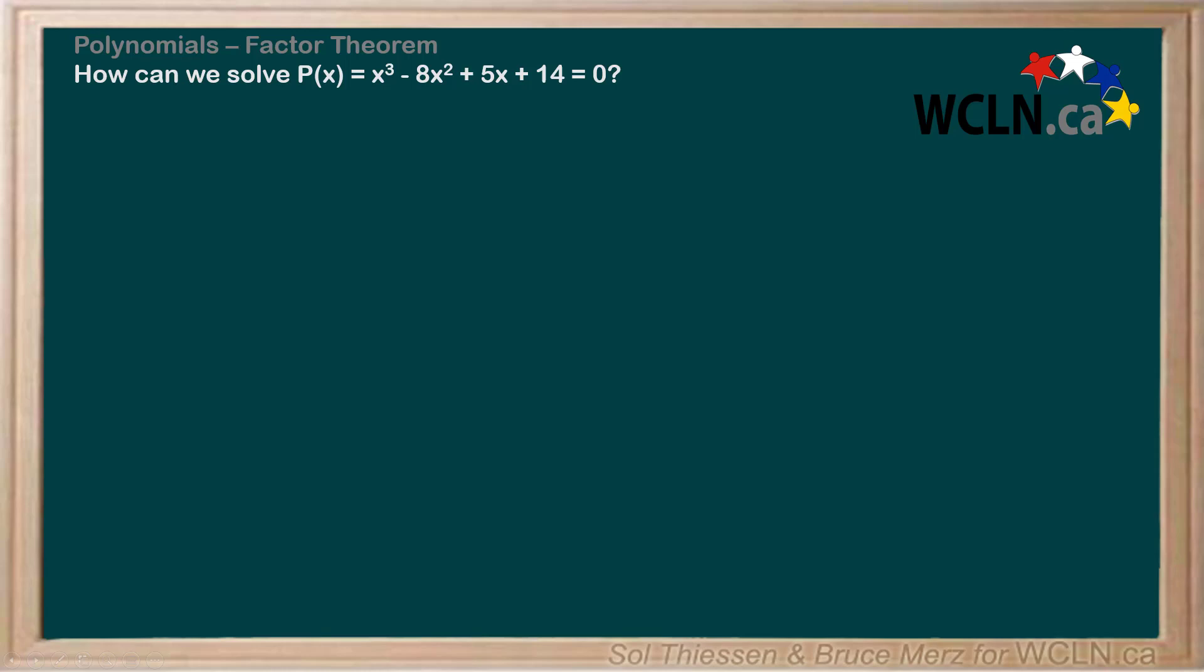How can we solve P(x) = x³ - 8x² + 5x + 14 = 0? You're probably a little stumped as to how we can go about solving this, so let's take a step back to something that's hopefully more familiar to you.